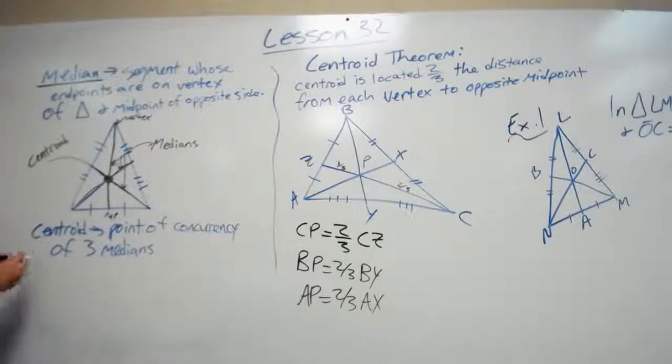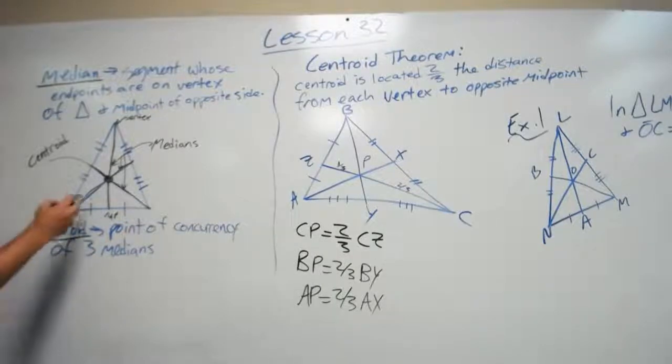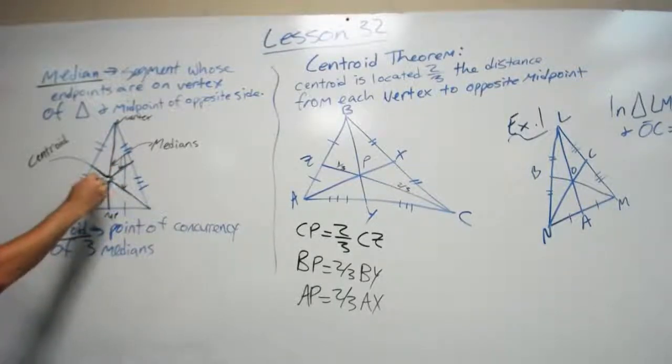The next definition is a centroid. A centroid is the point of concurrency between the three medians. So where all three of these lines meet, this point right here, that is known as the centroid.